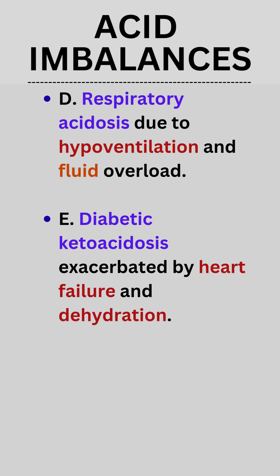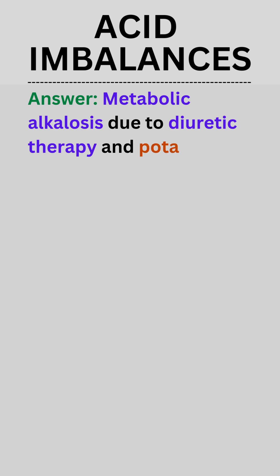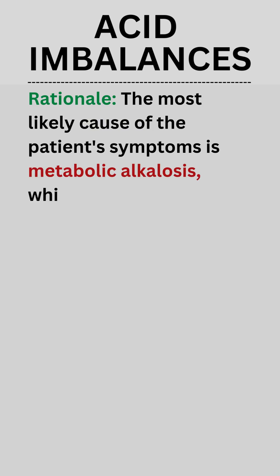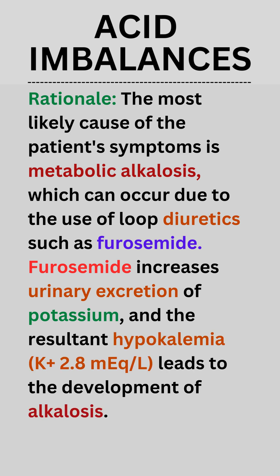E. Diabetic ketoacidosis exacerbated by heart failure and dehydration. The correct answer is C: Metabolic alkalosis due to diuretic therapy and potassium depletion. Rationale: The most likely cause of the patient's symptoms is metabolic alkalosis, which can occur due to the use of loop diuretics such as furosemide.